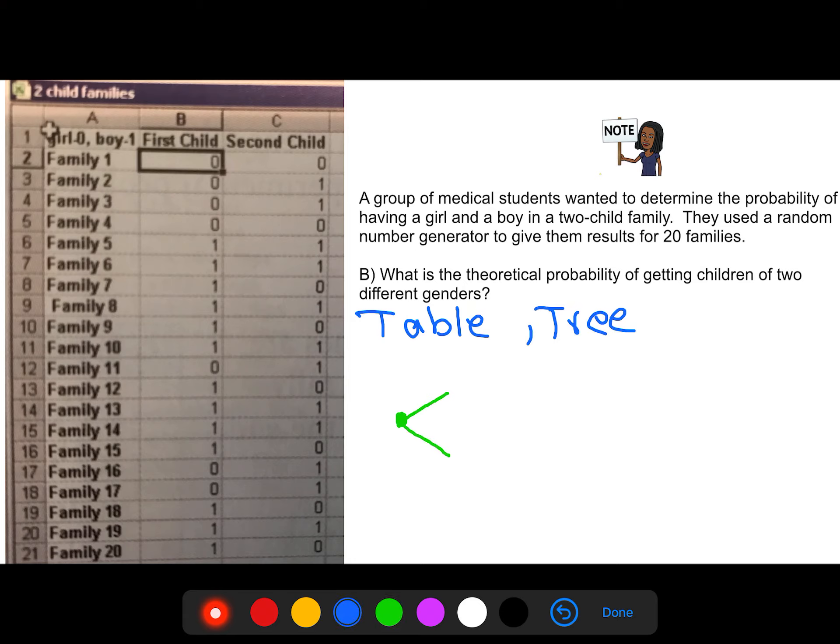When we look at this, we have two options. We start with a dot. This is the first child. The first child would be either a girl or a boy. Then the second child, let's say the first child was a girl. The second child could either be a girl or a boy. But if the first child was a boy, you can still have, for the second, a girl or a boy. So this is theoretical probability. Now, how many total do we have here? So we have, if I look here to here, girl, girl. Here to here, girl, boy. Here, here, boy, girl. Here, here, boy, boy. We have a total of four. That's our total, one, two, three, four.